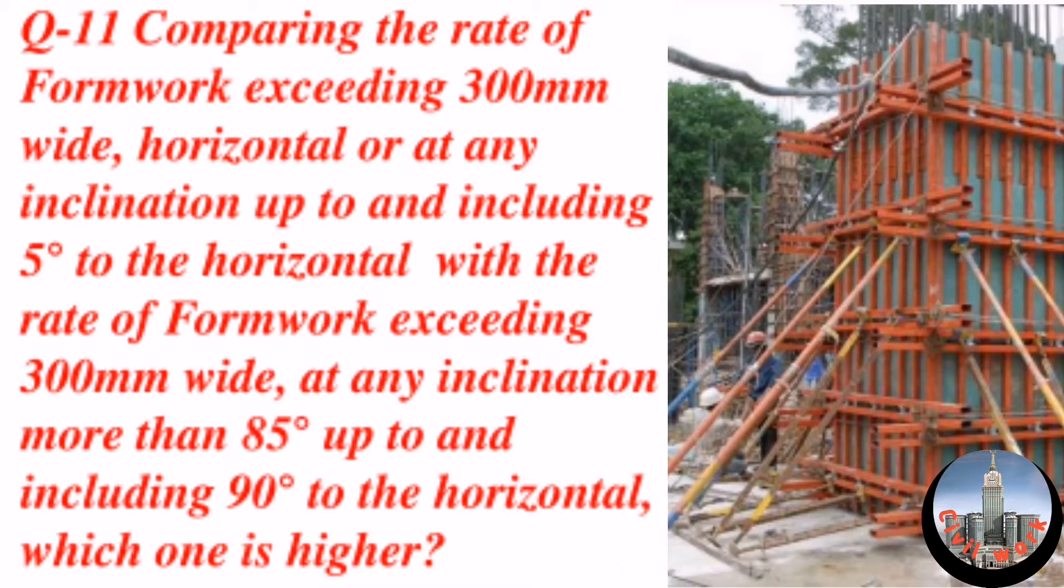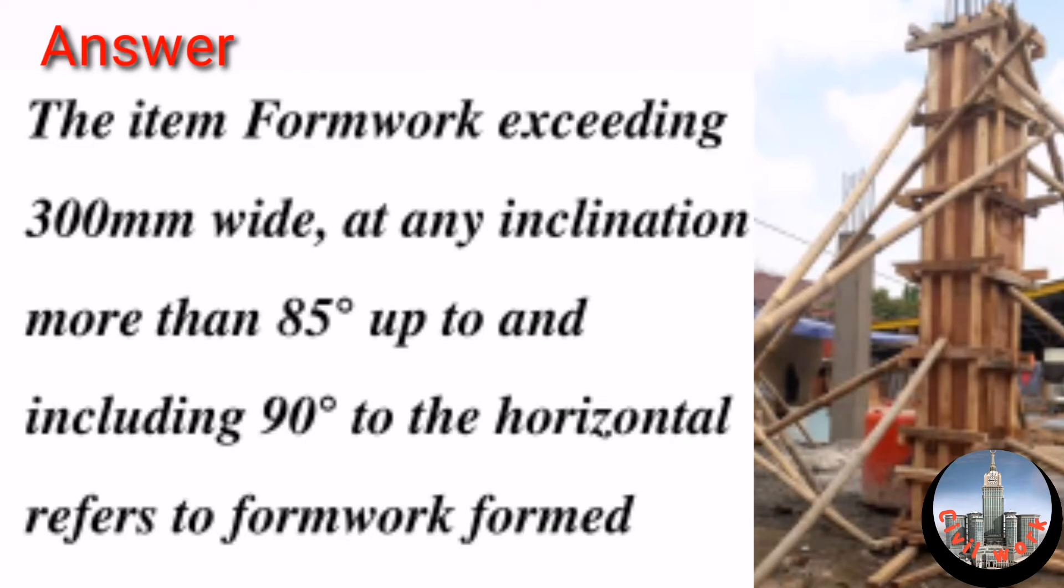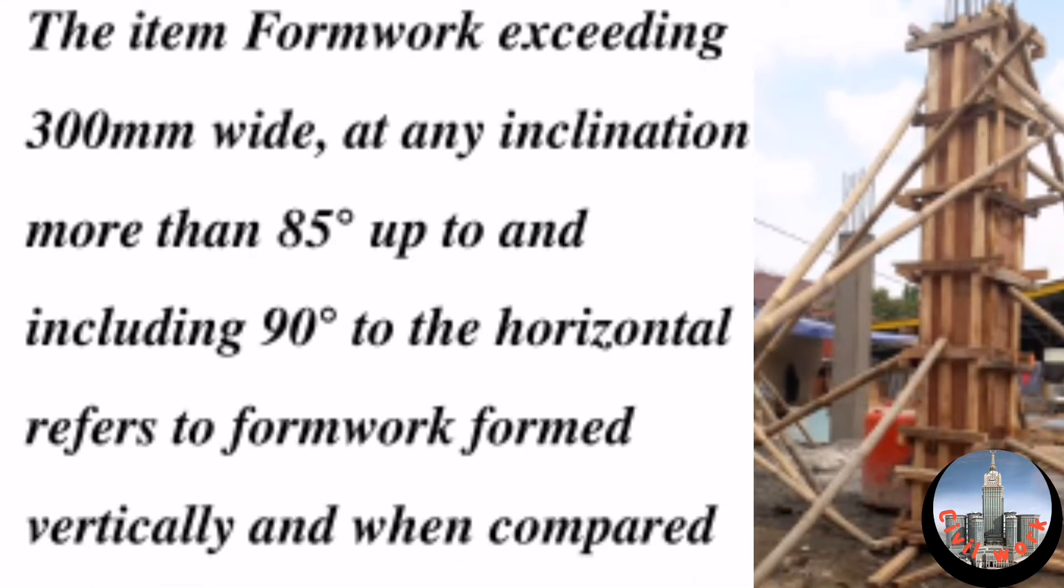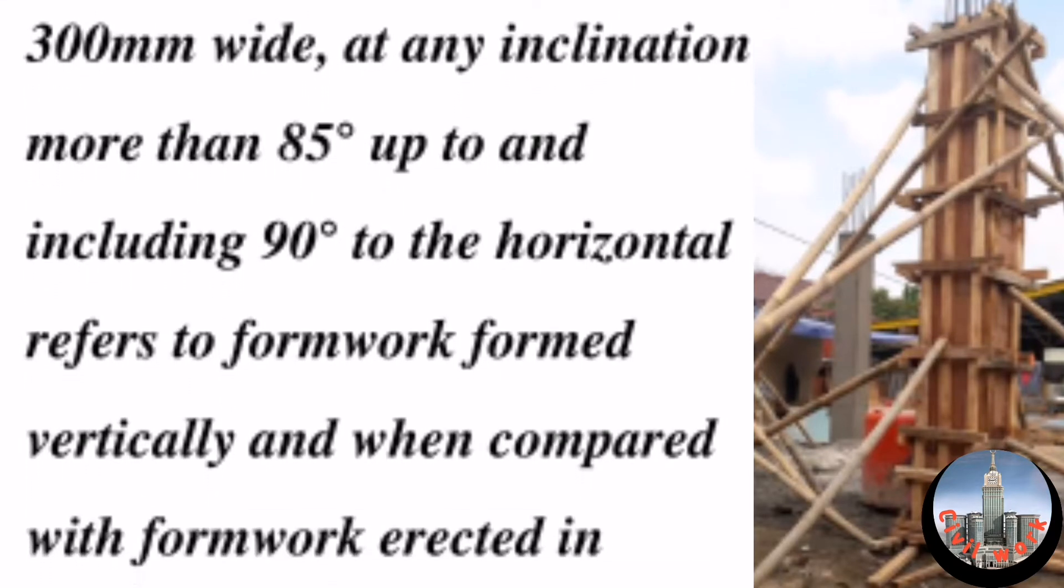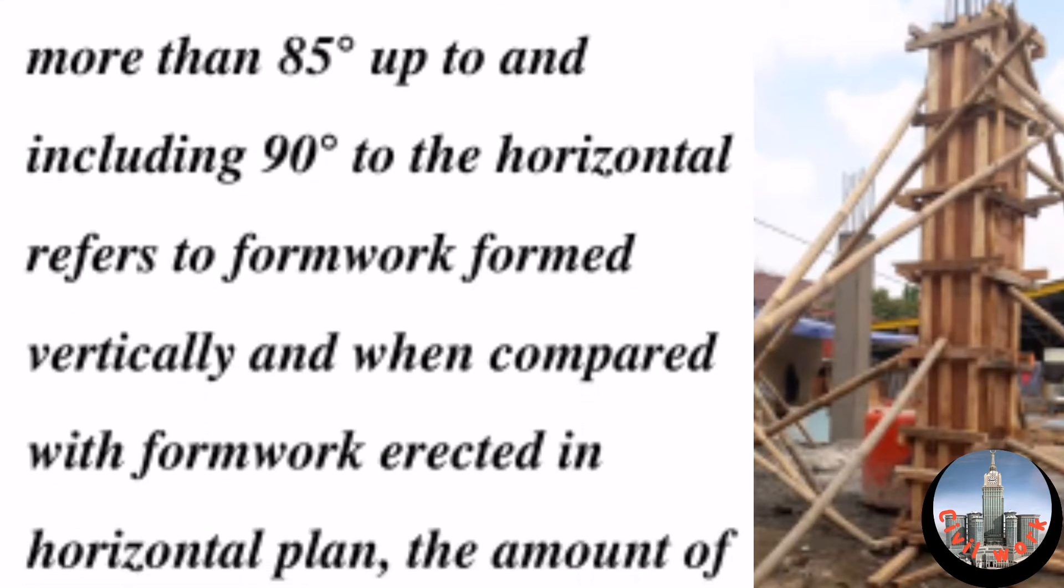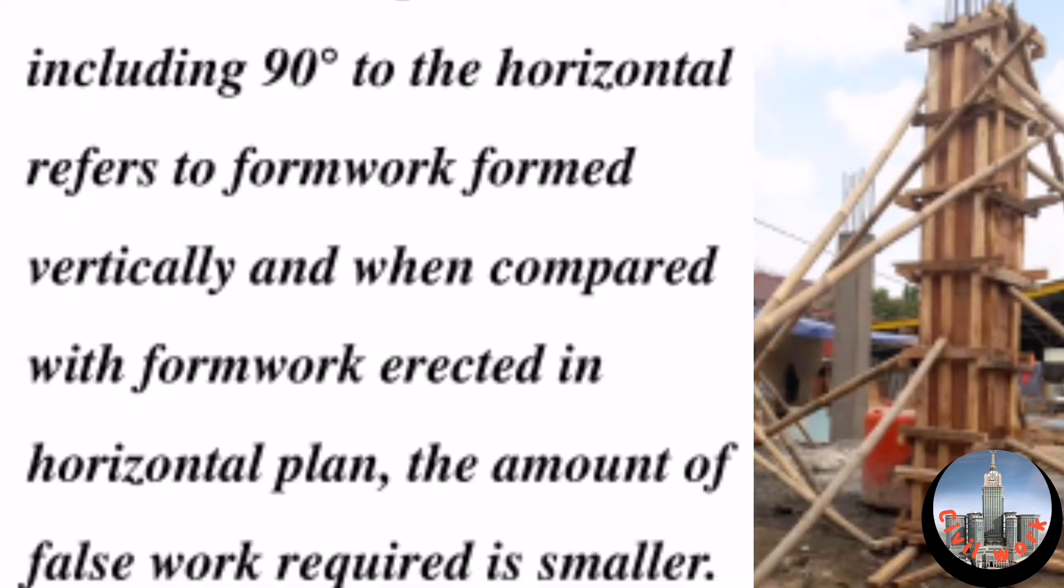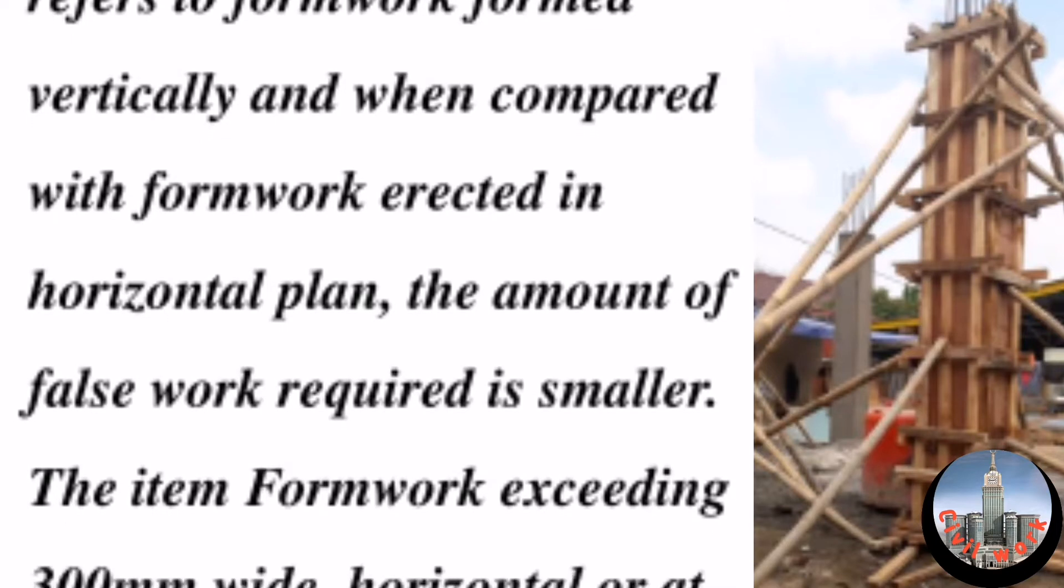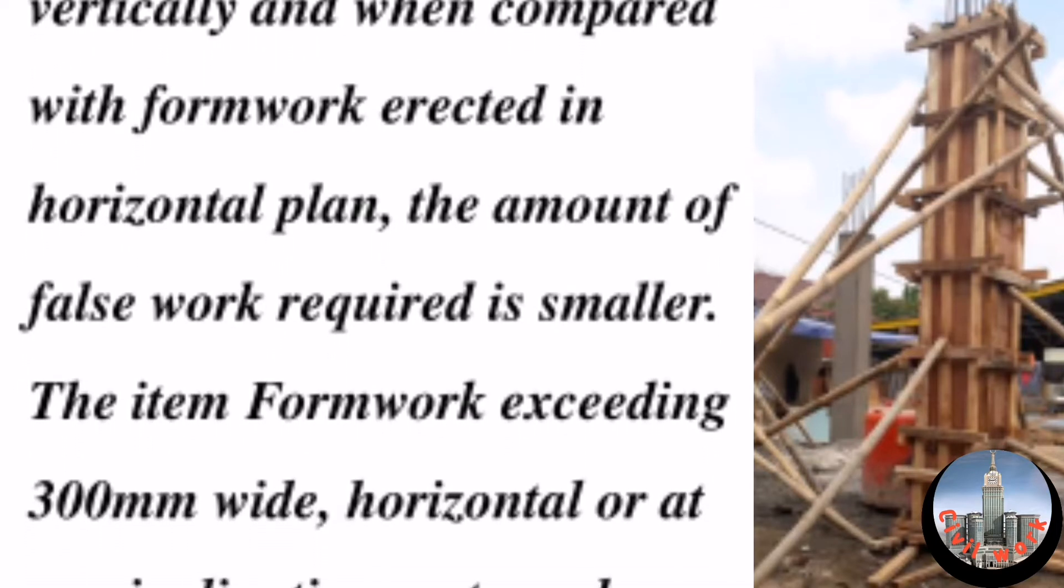The item formwork exceeding 300mm wide at any inclination more than 85 degrees up to and including 90 degrees to the horizontal refers to formwork formed vertically. When compared with formwork erected in horizontal plan, the amount of falsework required is smaller.